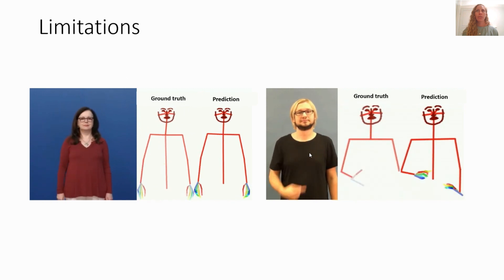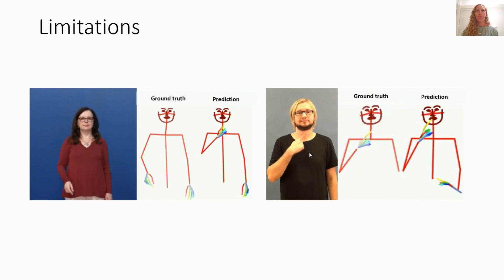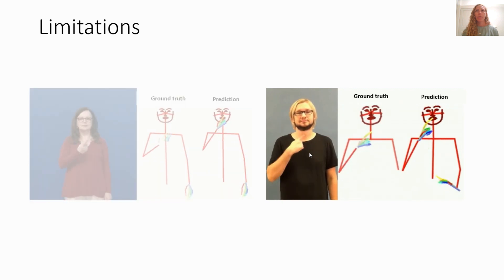Even though our model achieves good results, it has some limitations. One example is wrong hand location due to local proximity. For example, in this case, the finger touches the mouth instead of the neck.